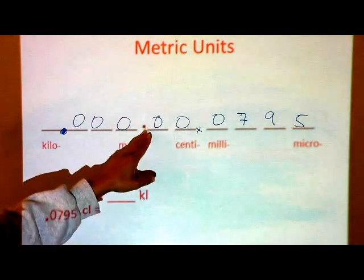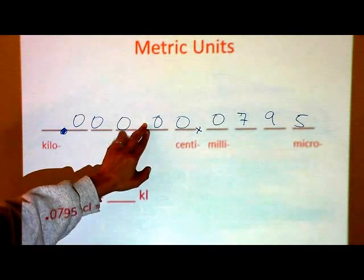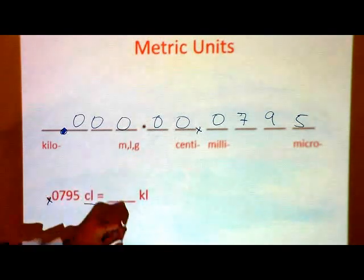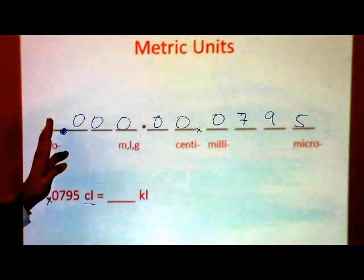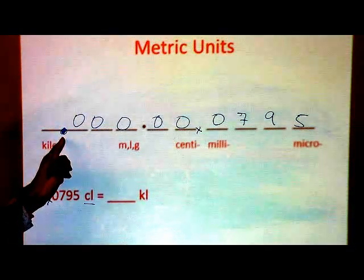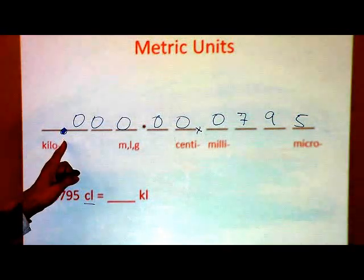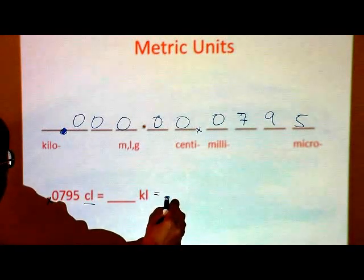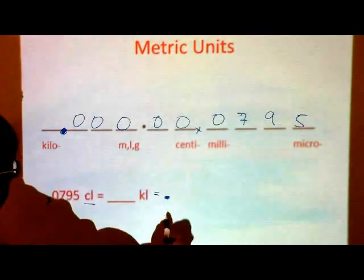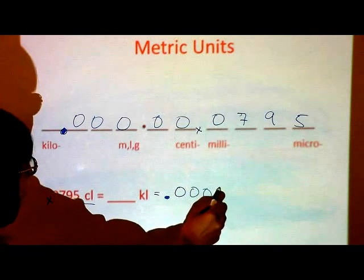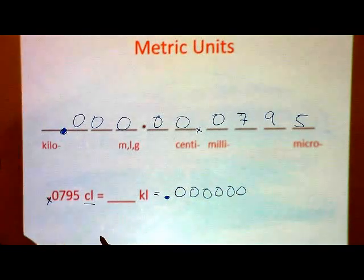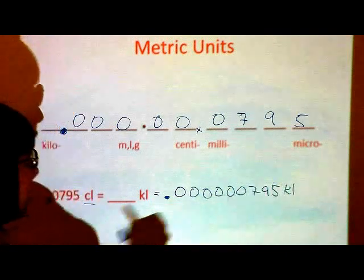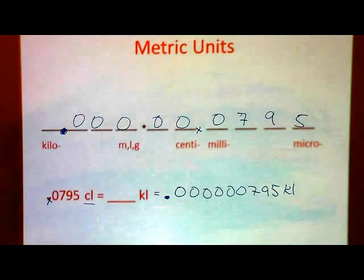You might be wondering what to do with the original decimal point — ignore it. It doesn't exist for this purpose, because that decimal point is only important if you're interested in the centiliter column. We're not; we're interested in the KL column, so this is the decimal point you should be concerned with. The answer is .000000795 KL. Hopefully you got that right.